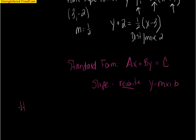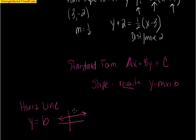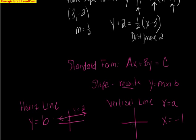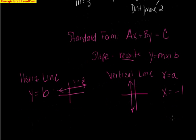Some special types of lines: horizontal lines are always in the form y equals a number. For example, y equals 2 — you draw a horizontal line crossing through 2 on the y-axis. A vertical line is x equals a number. For example, x equals negative 1 — you come over to negative 1 and draw a vertical line through it. Horizontal lines only have a y-intercept, and vertical lines only have an x-intercept. They are very simple to draw.